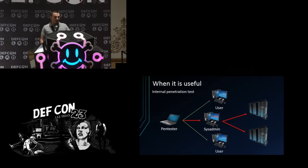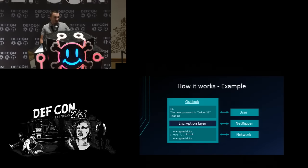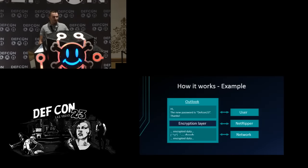Here is the main scenario. In our projects we encountered this situation multiple times. We had access to administrator laptops and we didn't know what to do to pivot to the other servers. So this is where the idea came from. This is the general example of how it works — let's say for Outlook. The user layer is where the user types the email, the network layer contains the encrypted data, and NetRipper is injected at the encryption layer.